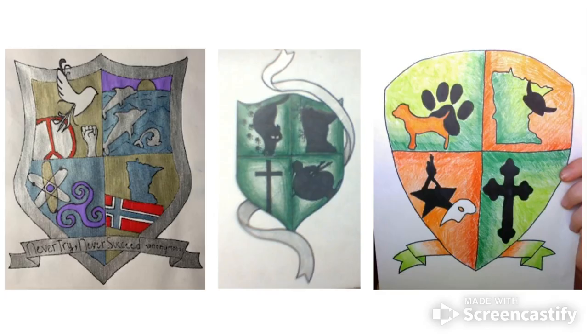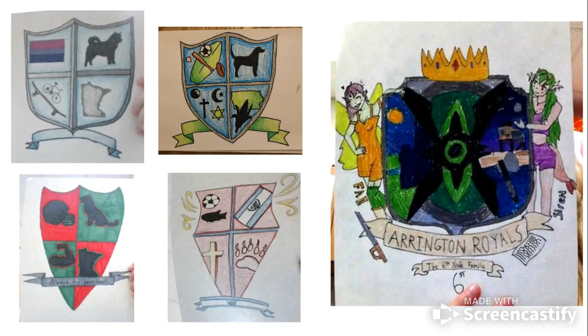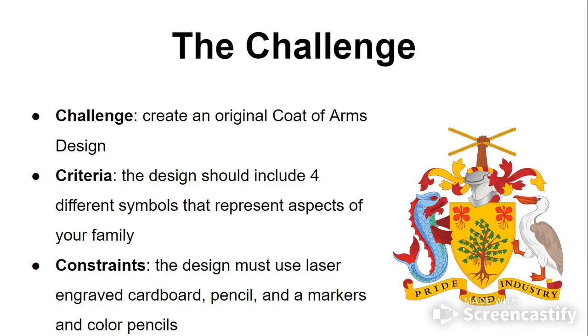Here are some different examples of student quality from the past. Notice how there are four different sections. Notice how there are large images or symbols. And notice how there's a consistent color scheme. Your goal is to create a high-quality artwork like this at the conclusion of the activity.